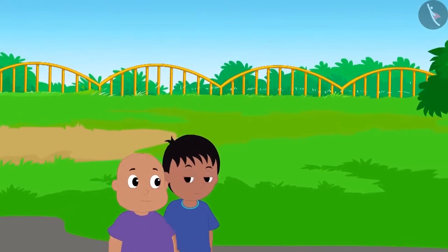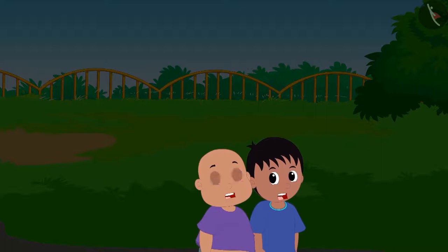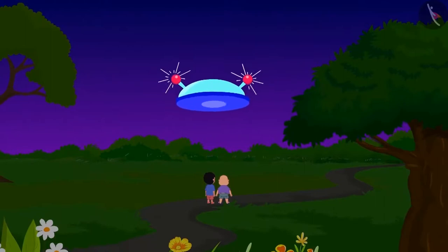Today, Raju and Bablu are walking in the park happily once again. Hey, how has it suddenly become dark? What is this? It looks like Jeev's spaceship.